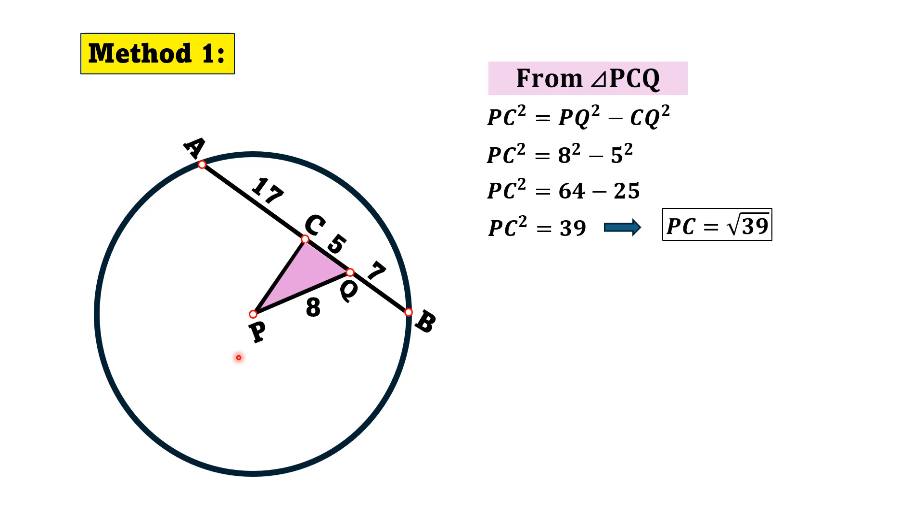Now we draw another line segment from point P to A, which is actually the radius of the circle. Here we have another right triangle PCA. From this right triangle PCA, using Pythagorean theorem, we have PA square is equal to PC square plus CA square. So substituting the value of PC and CA, PC square is 39 and CA square is equal to 144 since CA is 12 units.